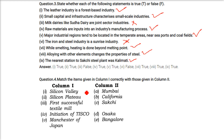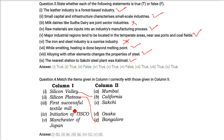Now let us match these. Silicon Valley matches with California. Silicon Plateau matches with Bengaluru. First successful textile mill matches with Mumbai. Initiation of TISCO matches with Sakchi. Manchester of Japan matches with Osaka.